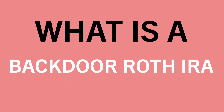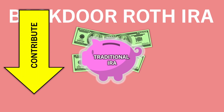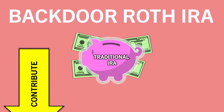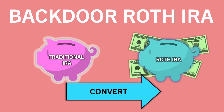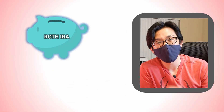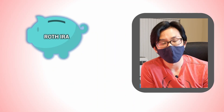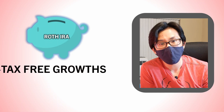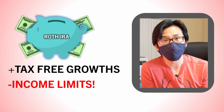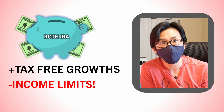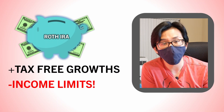What is a backdoor Roth IRA? A backdoor Roth IRA consists of two moves. You contribute post-tax money into a traditional IRA and then later convert it into a Roth IRA. Why do such a thing? Firstly, consider that the Roth IRA allows one to grow their dollars tax-free. However, there are income limits that must be satisfied for one to contribute to a Roth IRA.